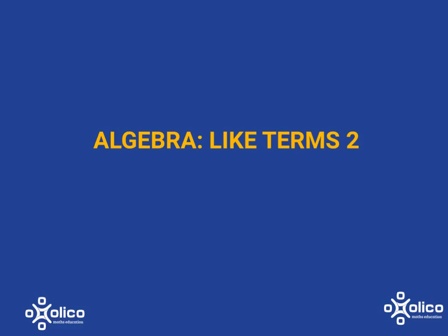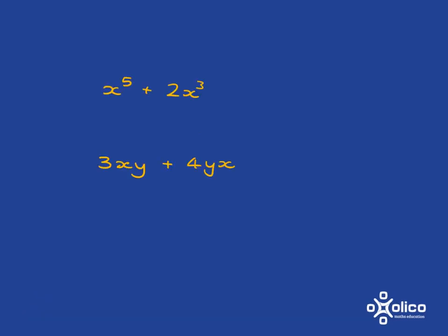We're going to do a bit more work with like terms. So if we have a look at x to the 5 plus 2x cubed, can we simplify?